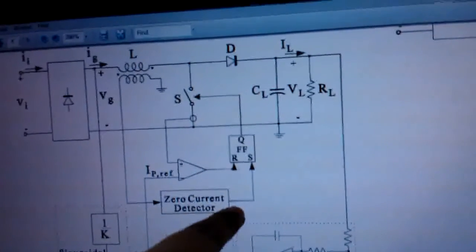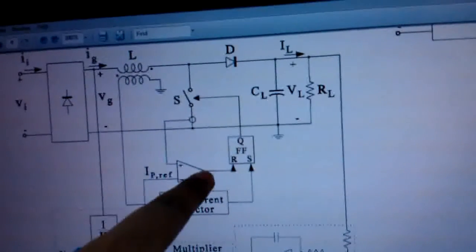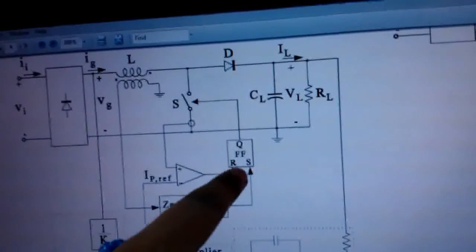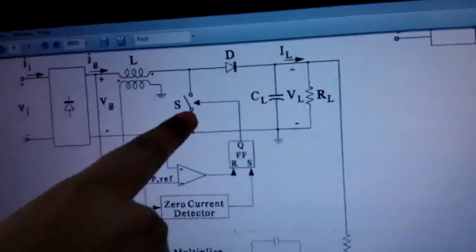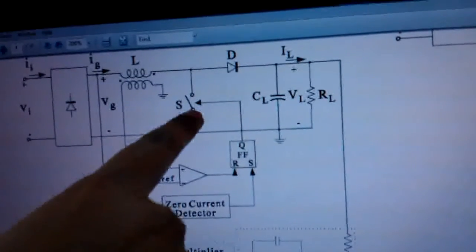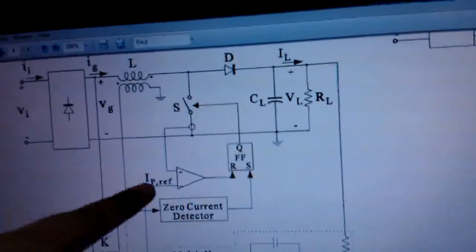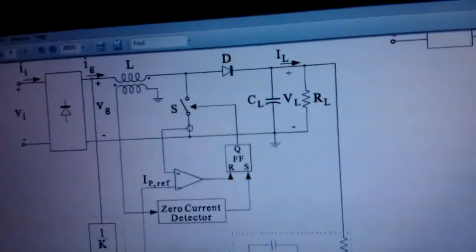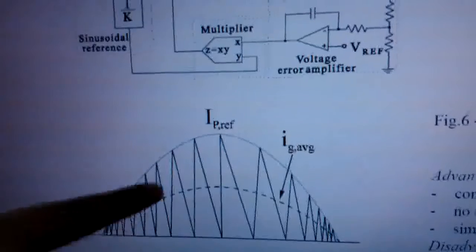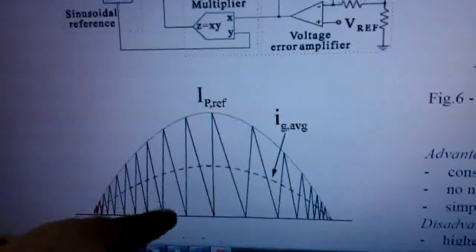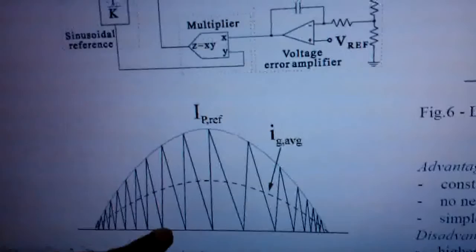When output of zero current detector is high and comparator is low, the SR flip-flop is set. That is MOSFET is switched on. The MOSFET is turned off when the inductor current is higher than the IP reference. This is the turning off and current waveform, inductor current is like this.